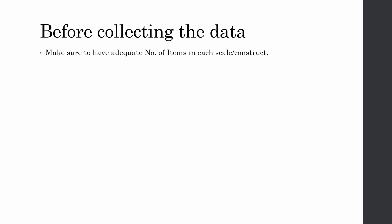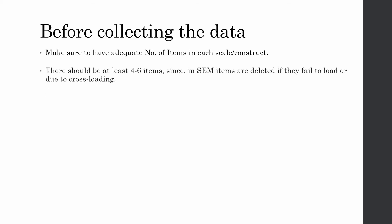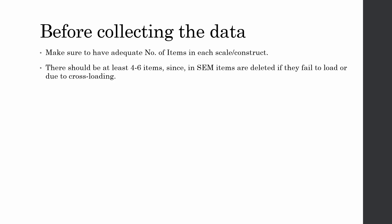Number one: make sure you have an adequate number of items in each scale or construct. Failure to have adequate items will result in problems when solving convergent and discriminant validity issues, because in SEM items are deleted if they fail to load or are cross-loading. You should have at least four to six items in each construct — I normally tend to go for six.